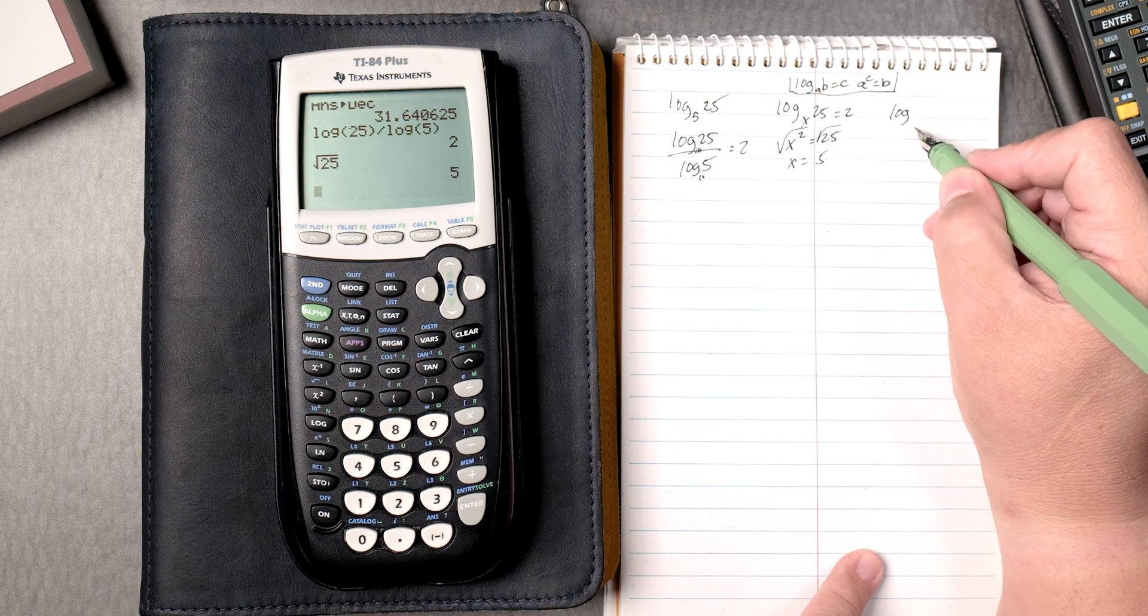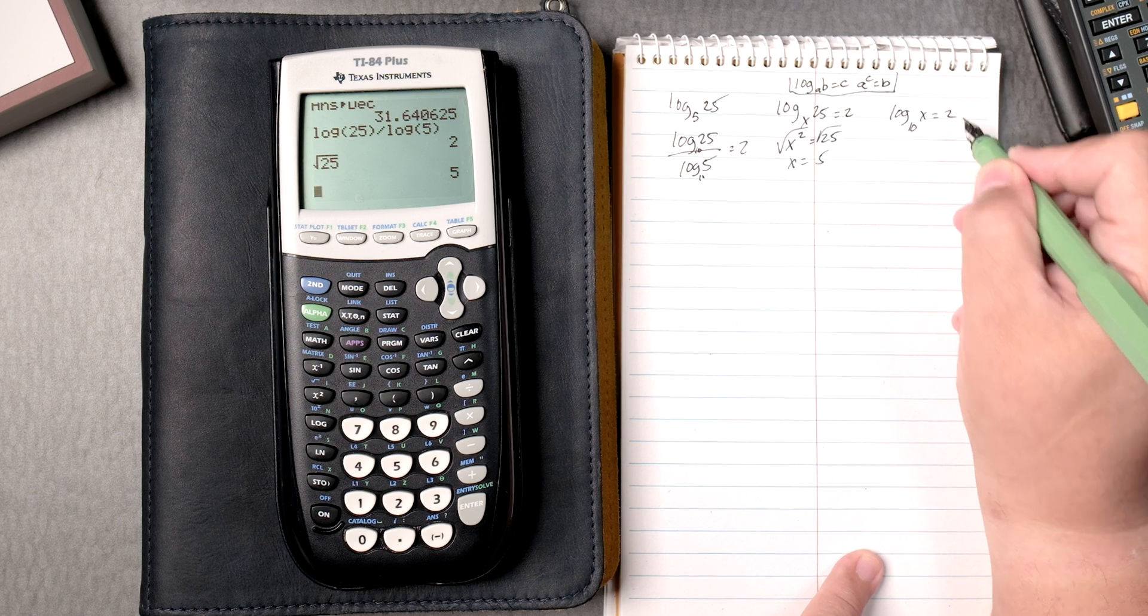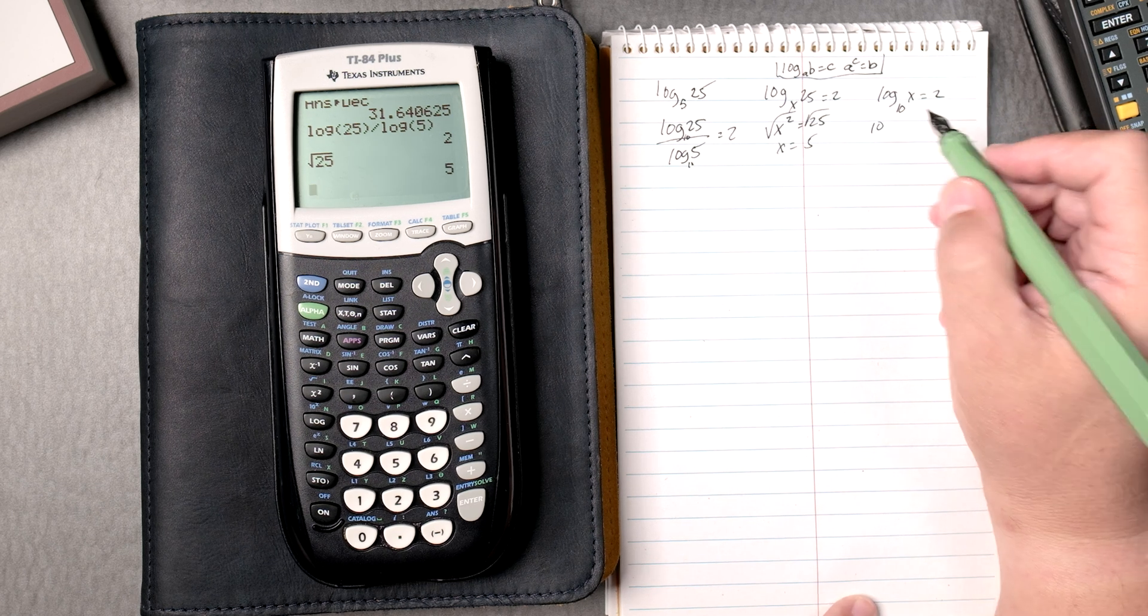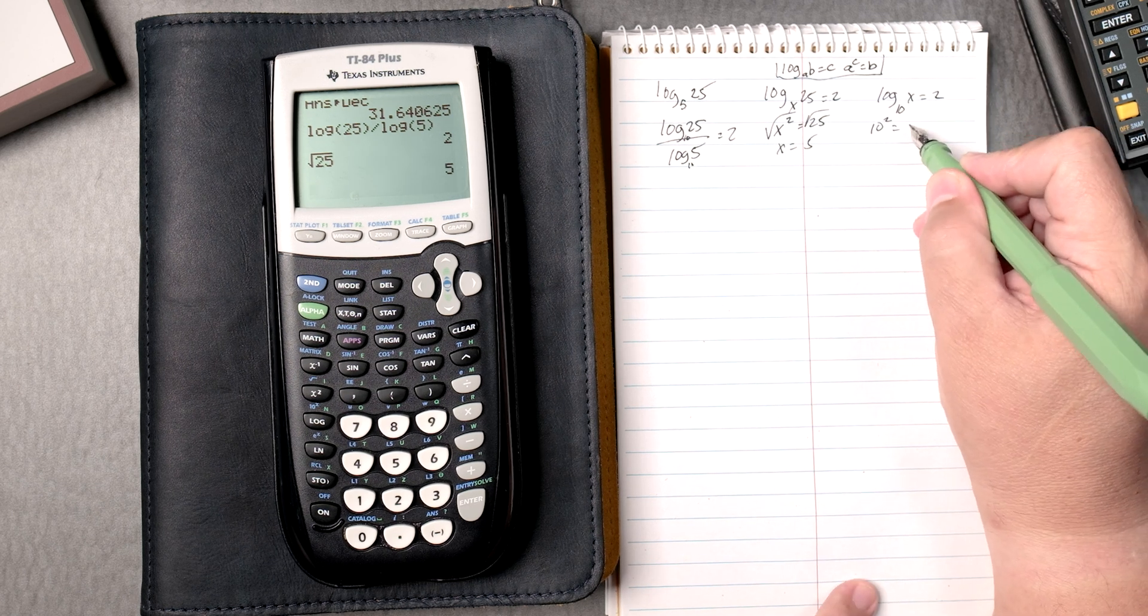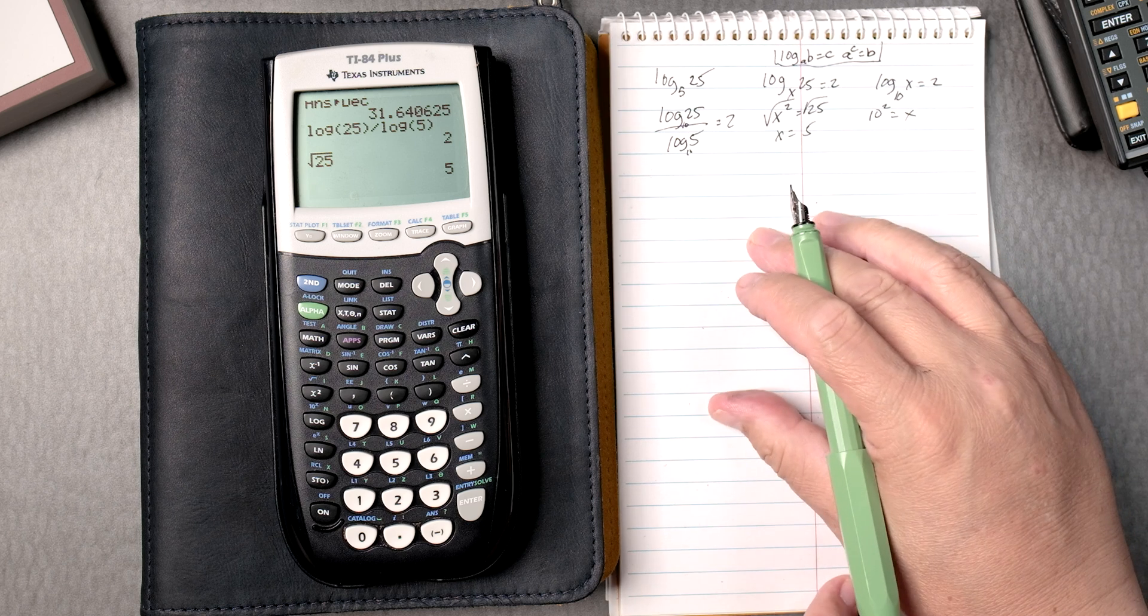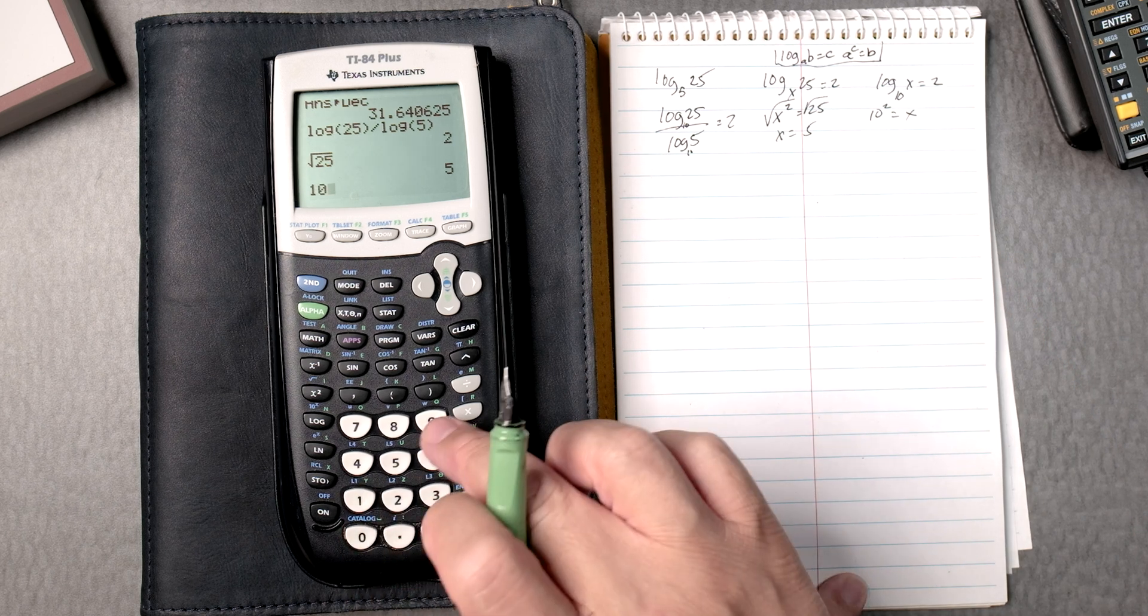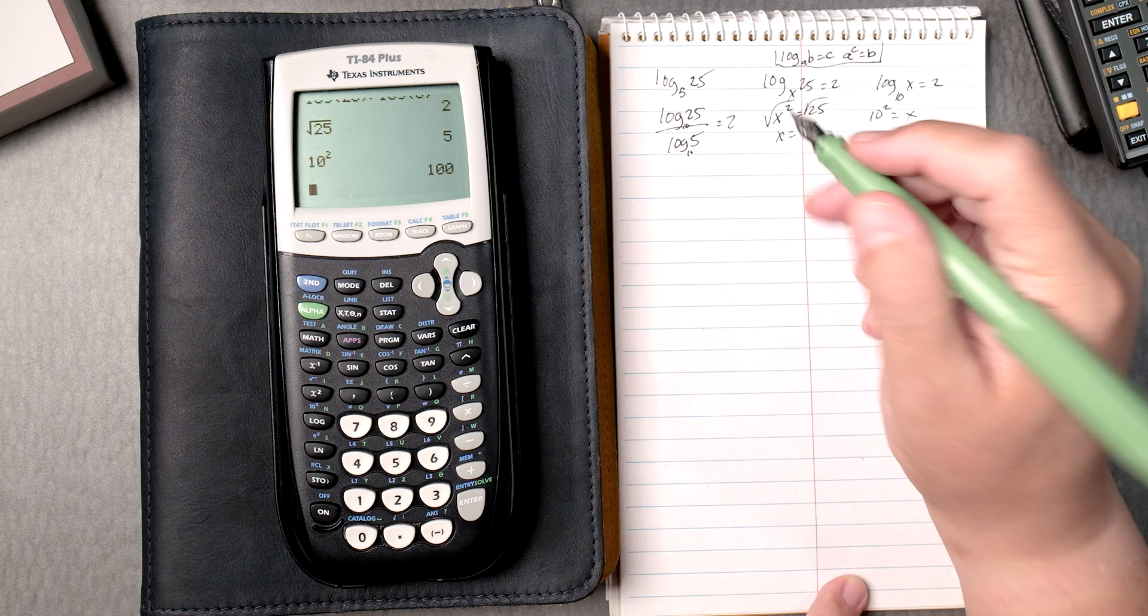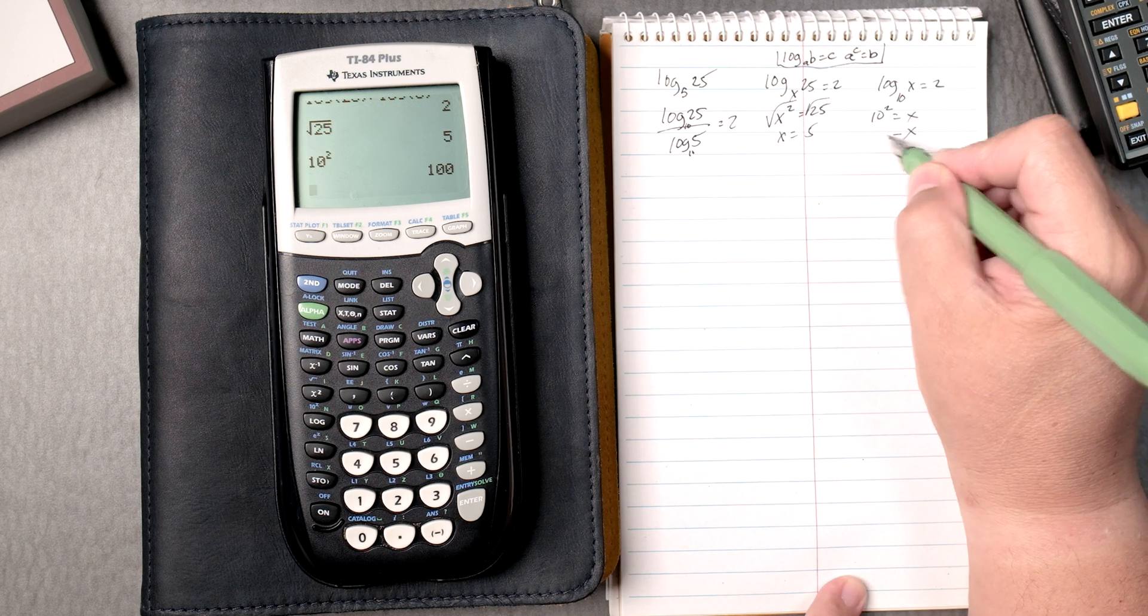Here's the log of base 10, x equals 2. 10, right, 10 squared equals x. We go 10, and then we have the caret, and then 2, enter, very nicely, x equals 100, we probably already knew that.